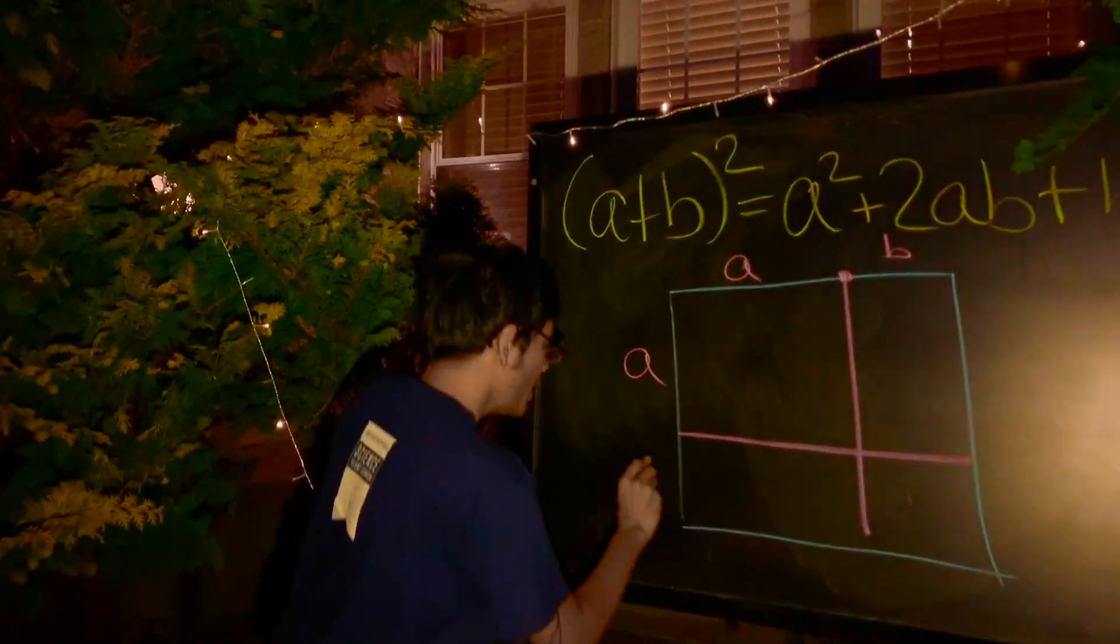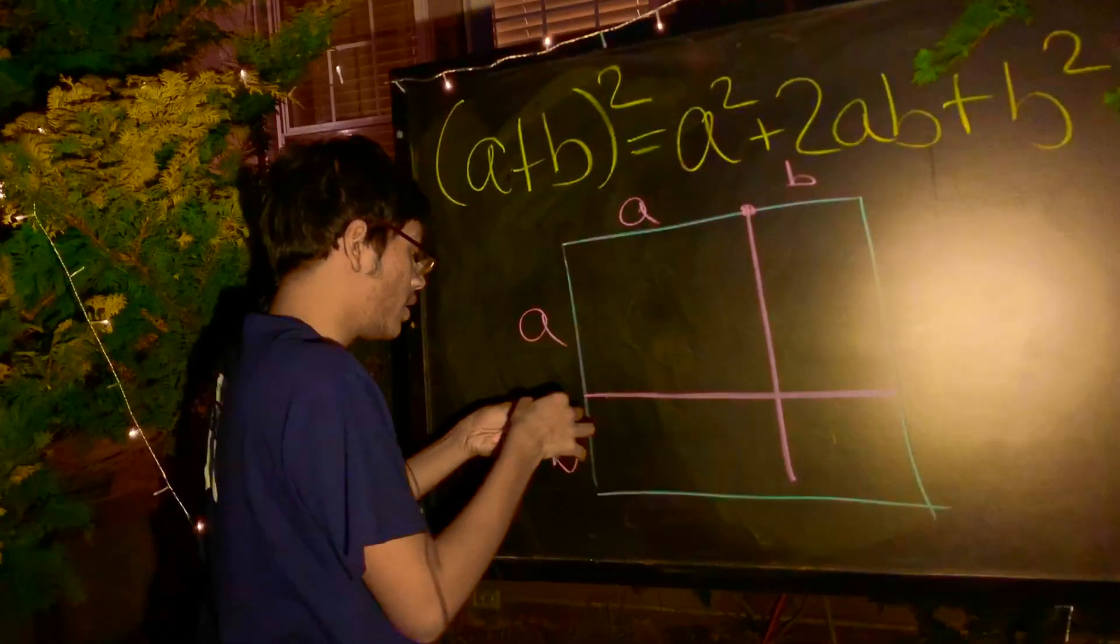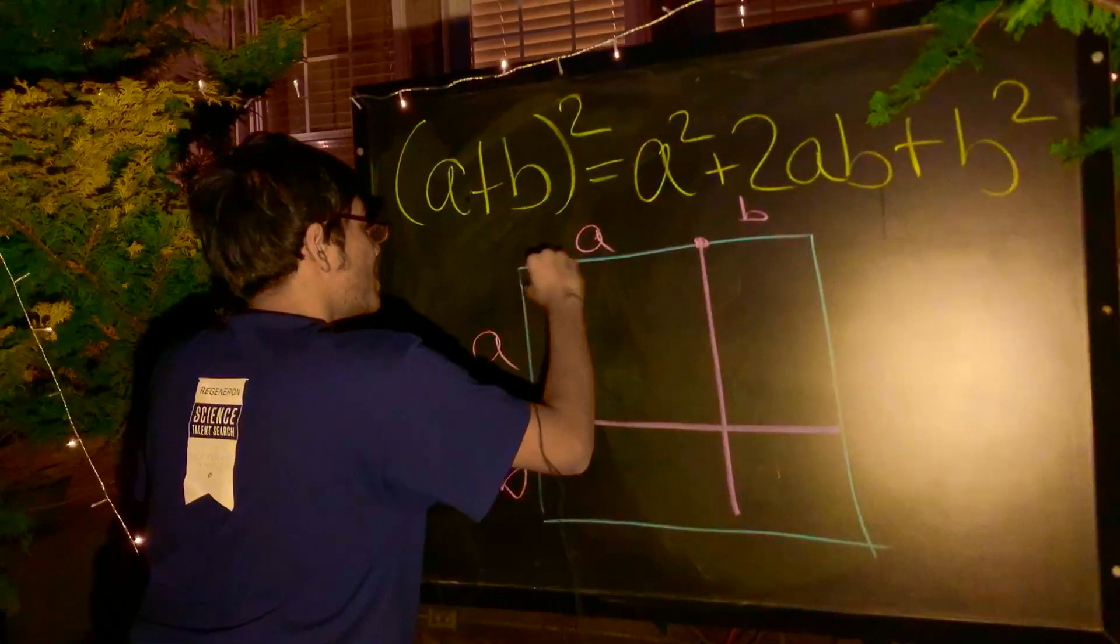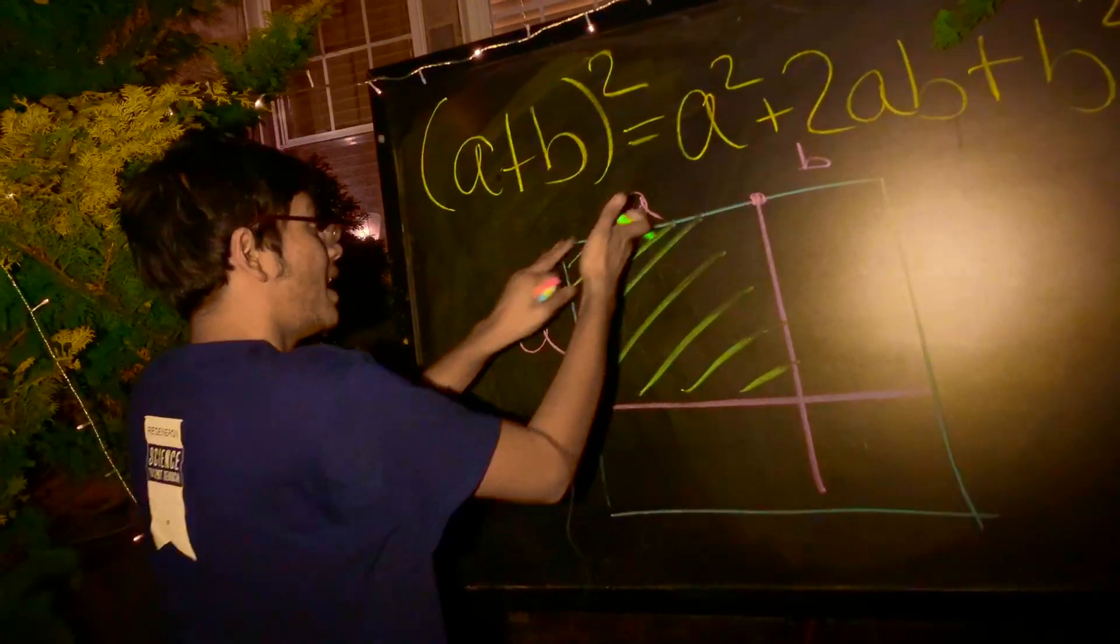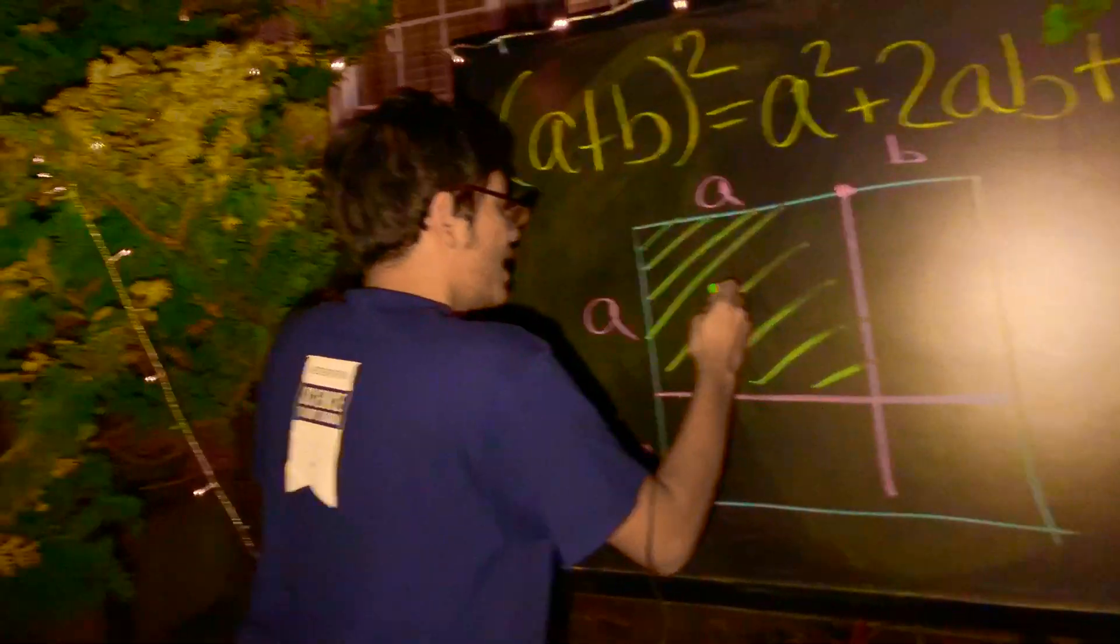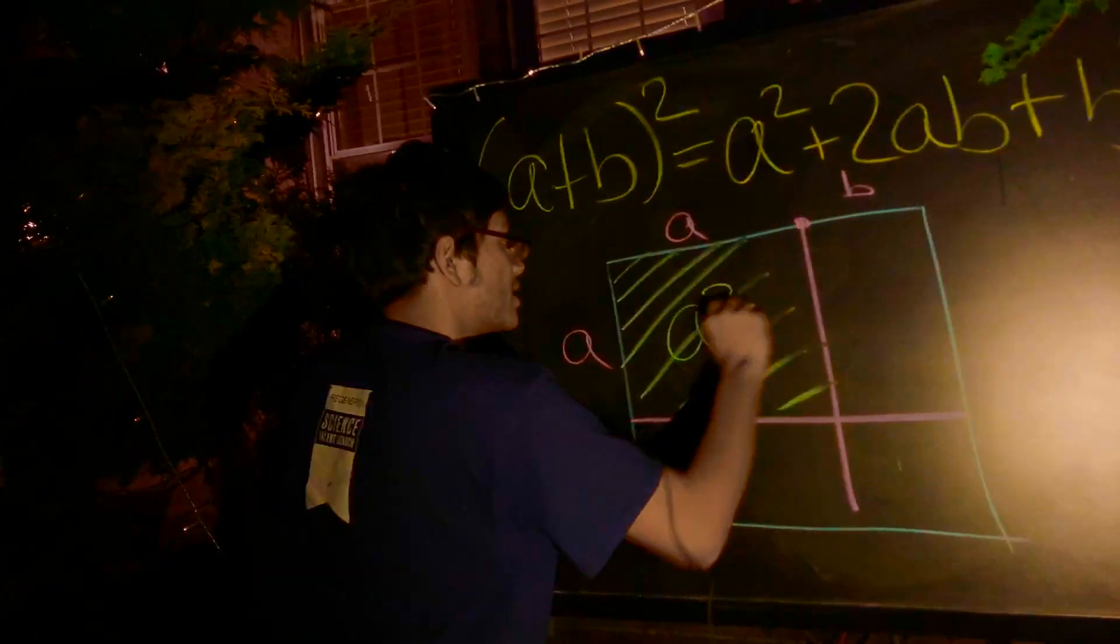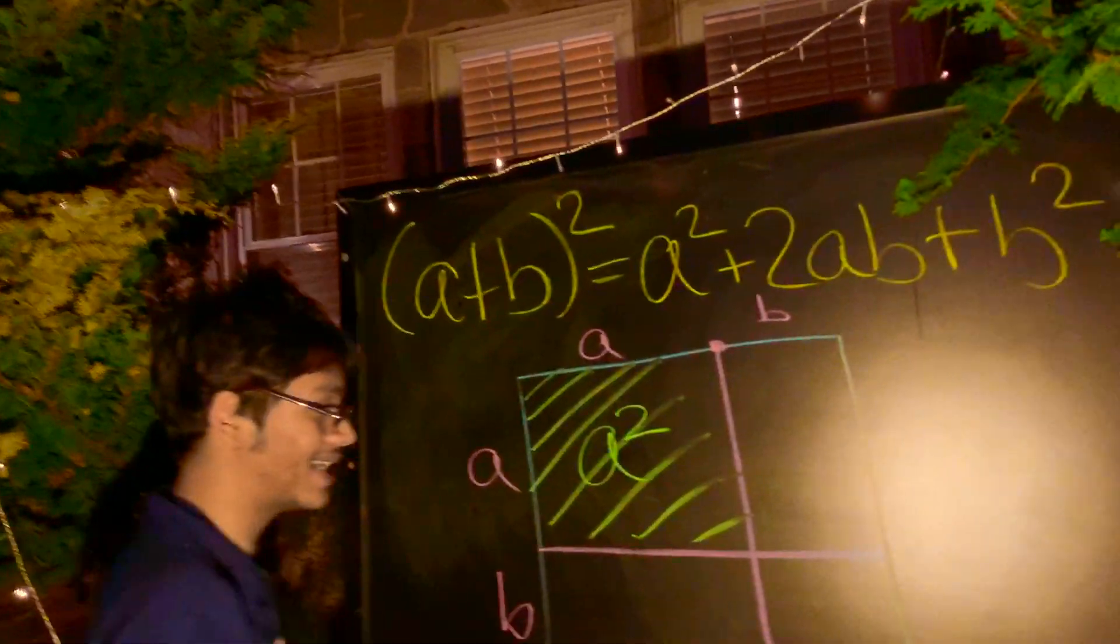We end up with a square of area A squared, because, of course, this rectangle right here has an area of A times A. And, of course, A times A is simply A squared.